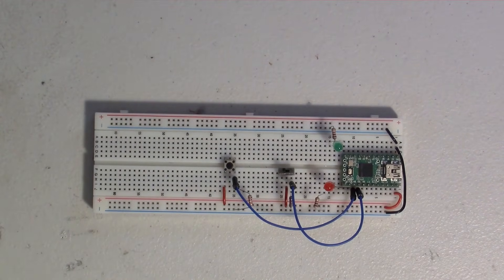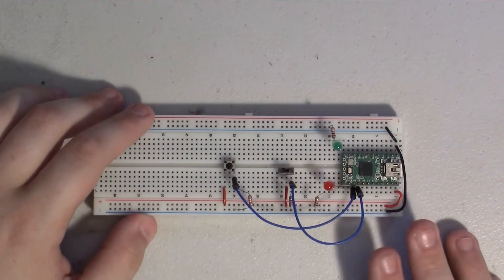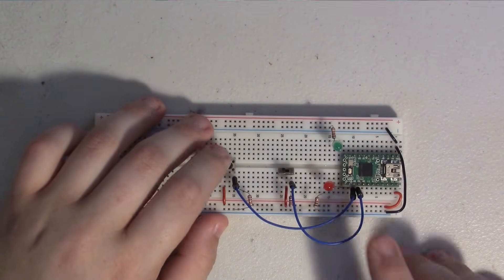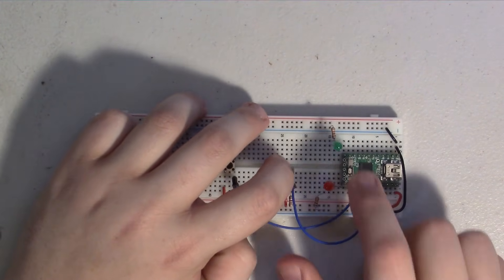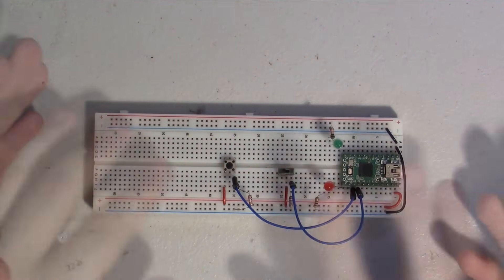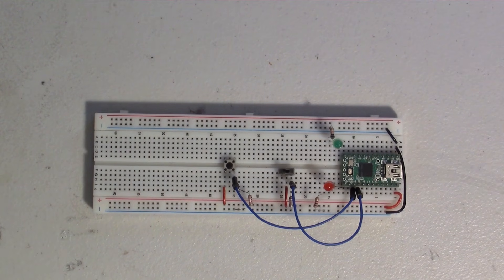Okay, so now we have this wired up. When we push the button, this red light will turn on. When we flip the switch, this green light will turn on. So let's take a look at the code that makes all this work.